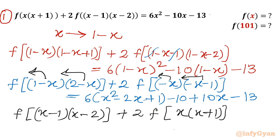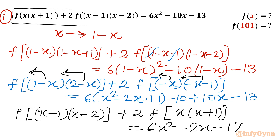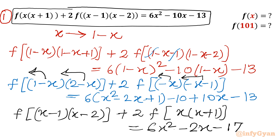For the right-hand side I will write: 6x² - 12x + 10x, so that becomes -2x, and 6 - 10 - 13 gives -17. So the right-hand side is 6x² - 2x - 17. I will consider this as equation 2.